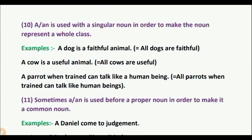Rule 10: A or AN is used with a singular noun in order to make the noun represent a whole class. When a noun represents a whole class, we use A or AN. Examples: 'A dog is a faithful animal' — meaning all dogs are faithful. 'A cow is a useful animal' — all cows are useful. 'A parrot, when a friend, can talk like a human being' — meaning all parrots can talk like a human being.